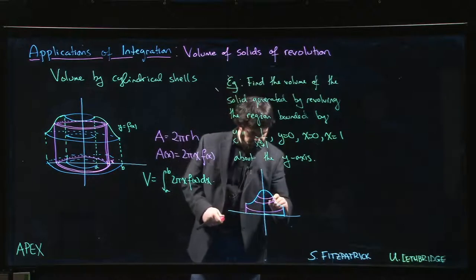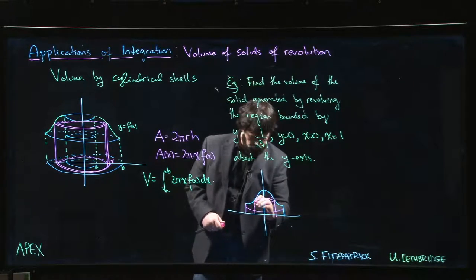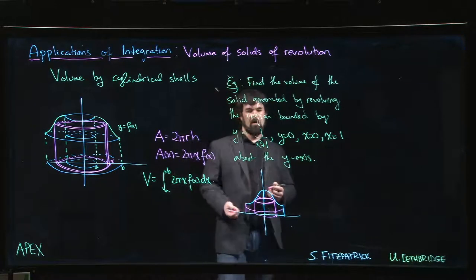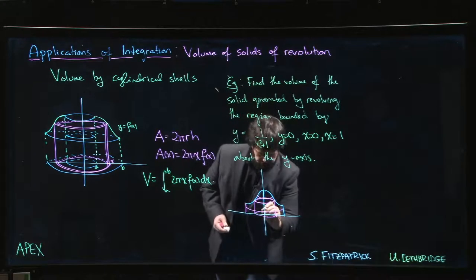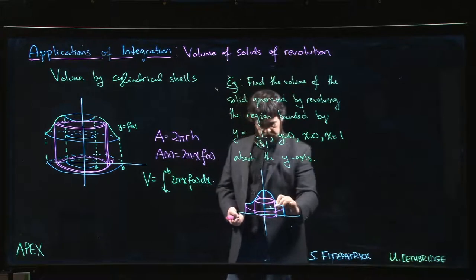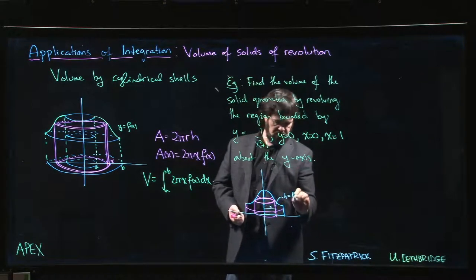So what a typical shell looks like—draw this one here. There's our shell, so there's our cylindrical shell, looks something like that. The radius of my shell is simply x, the height is f of x, which is 1 over x squared plus 1.